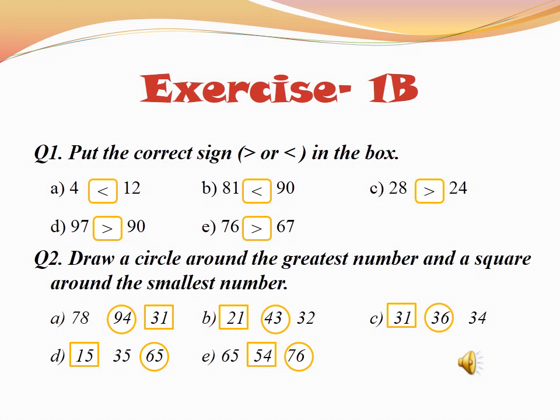In part C, the numbers are 31, 36, and 34. Which one is greatest? Here, all three numbers have 3 in the tens place, so we compare the ones place: 31 has 1, 36 has 6, 34 has 4. Which is greatest? 36. And which is smallest? 31. So we draw a circle around 36 and a square around 31.